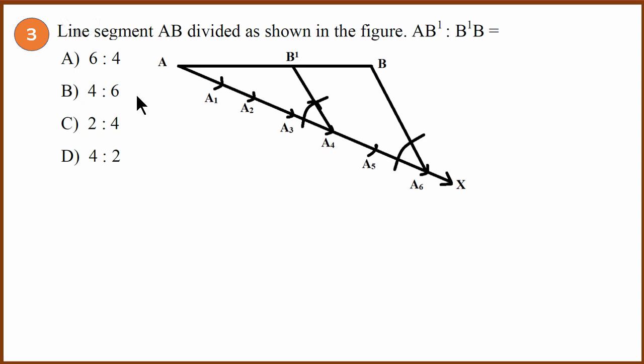Similar question. We have to find AB' or AB1 to B ratio. Again, we need to find out how many units are AB1. If you do that, 1, 2, 3, 4 units. How many units are B1B? 1 and 2 units. So the correct answer is 4 is to 2.